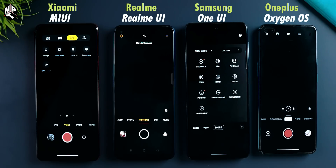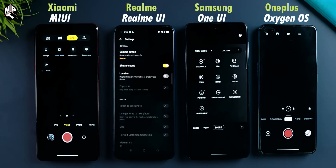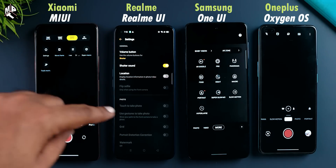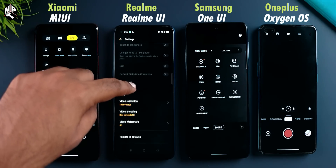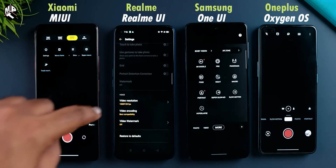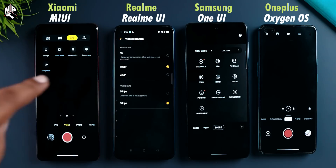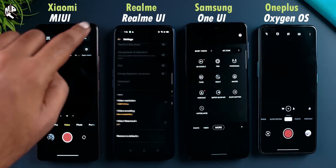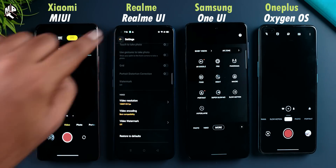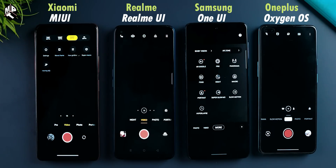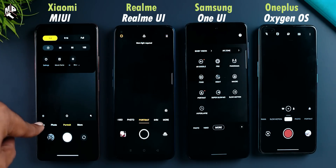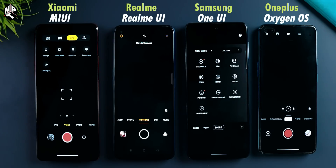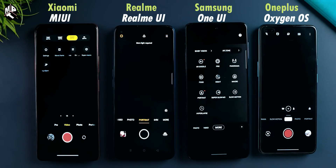For example, in Realme UI, we are going to go to settings for the quality of the video. We are going to click on the video tab and go to settings for the video resolution.